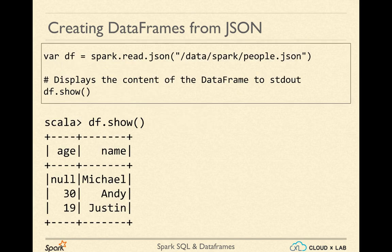To load standard formats as a DataFrame, the Spark session provides a read object which has various methods. Here we are calling the JSON method on the read object of Spark. This is very similar to the way people usually load data in R. The location by default is considered as HDFS.